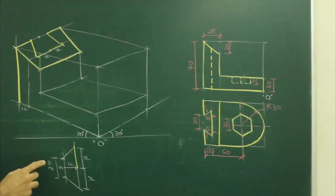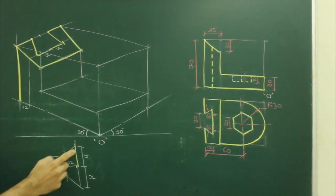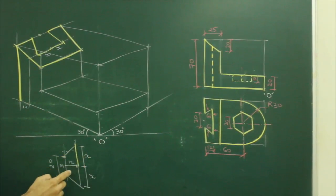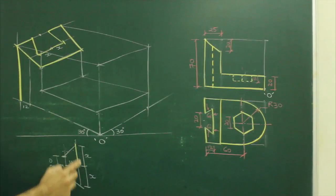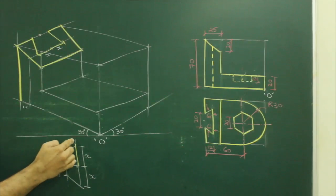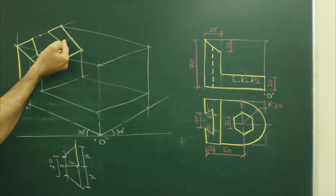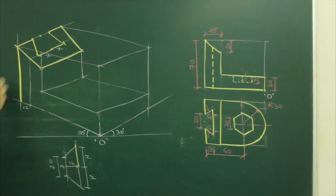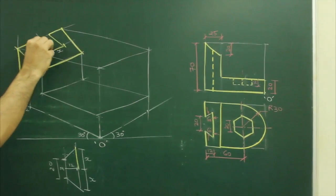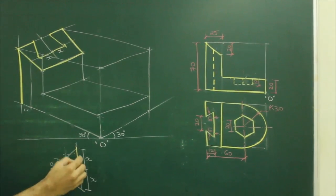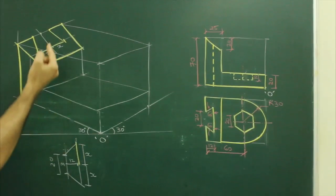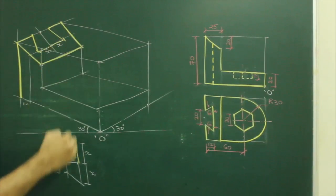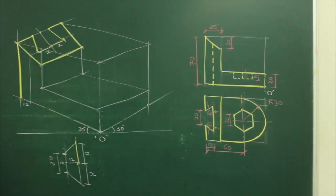So always remember, whenever you have a circle with such a slot — it is called a dovetail slot — you need to draw it in orthographic view. Find out the linear distance, and take that linear distance and cut off on this side. Take this x, cut here. Take this x, cut here.